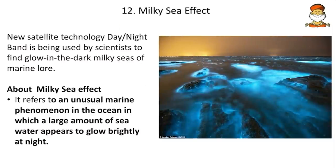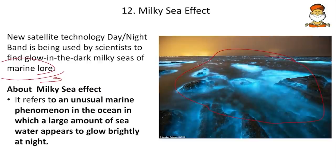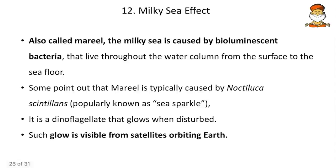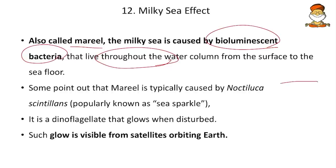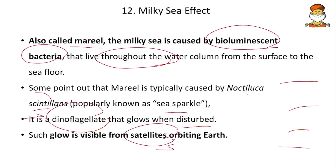Milky Sea effect: new satellite technology (day or night band) is being used to find the glow-in-the-dark Milky Sea of marine lore. It refers to an unusual marine phenomenon where a large amount of sea water appears to glow brightly at night, caused by bioluminescent bacteria living throughout the water column from surface to floor. This is also called 'maryl.' Some point out it is typically caused by Noctiluca scintillans, popularly known as sea sparkle — a dinoflagellate that glows when disturbed. Such glow is visible from satellites.